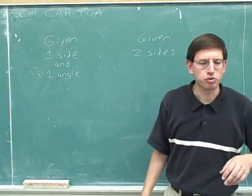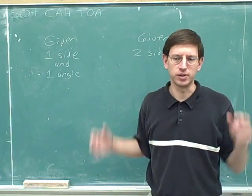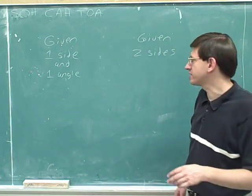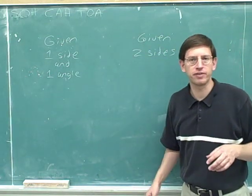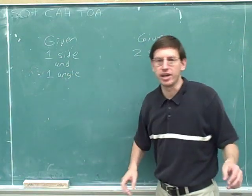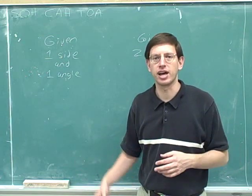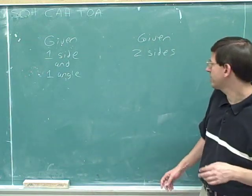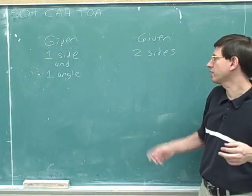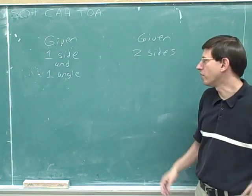What we're trying to do now is learn how trig functions are useful — how do trig functions help you figure things out? There are two types of problems that trig functions can help us with. Sometimes we're given one side and one angle, and we can use trig functions to figure out everything else about the triangle. And sometimes we're given two sides of the triangle and no angles, and again we can use trig functions to find the other side and all the angles.